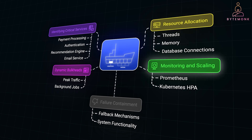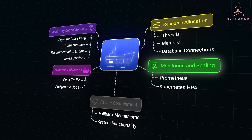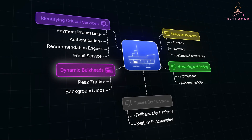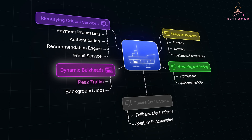Monitoring isn't just nice to have — it's critical. Without proper monitoring, it's easy for bulkheads to either be underutilized or overwhelmed. Tools like Prometheus or Kubernetes Horizontal Pod Autoscaling (HPA) allow you to monitor resource usage in real time, dynamically scaling your services as traffic spikes. Without this, your bulkheads could unintentionally create bottlenecks. In some systems, it makes sense to adjust bulkheads dynamically — during peak traffic times, you might want to allocate more resources to user-facing services while limiting background jobs temporarily.